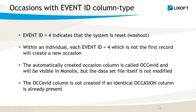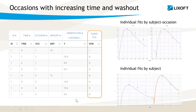Of course, occ-if-id is not created if the same information is already included in an occasion column. For example, this dataset still has a column occasion with increasing times between occasion 1 and 2, but it also has a column event ID with a value 4 at the first time of the second occasion. This will define a washout at the start of occasion 2, which will then be independent from occasion 1 in Monolix.